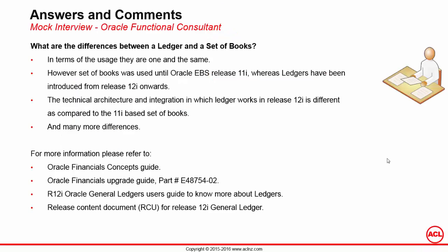The question we just asked was: what are the differences between a general ledger and a set of books? In terms of usage, they are pretty much the same and there is no difference between a ledger and a set of books at all. However, the term 'set of books' used to be there until Oracle Applications release 11i. In release 12, the functional architecture changed and the nomenclature of the setups changed — what used to be called 'set of books' is now called 'ledger.'